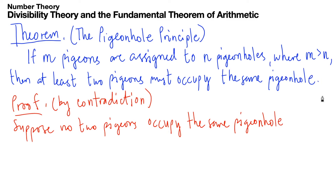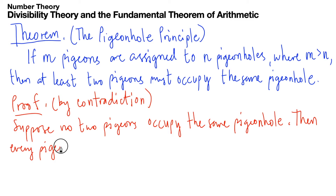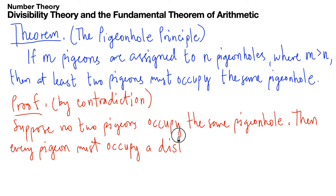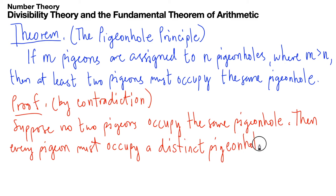If no two pigeons share a pigeonhole, then every pigeon must occupy a distinct pigeonhole — meaning each pigeon has its own pigeonhole. If all pigeons occupy distinct pigeonholes, then the number of pigeonholes must be greater than or equal to the number of pigeons; that is, n ≥ m.